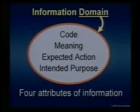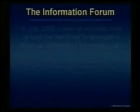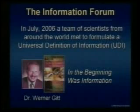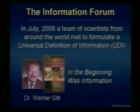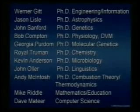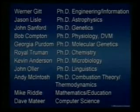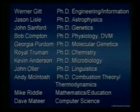Those are the four attributes — we call that our information domain. If any one of those is missing, then it's not going to be information based on the definition we're arriving at. In July 2006, a team of scientists from around the world met to formulate the universal definition of information, based off the work of Dr. Werner Gitt. It was a very diverse team — engineers, astrophysicists, geneticists, physiologists, molecular geneticists, and chemists. We spent five days enclosed in a room, with the purpose of formulating this universal definition to see how powerful it would be against materialism.